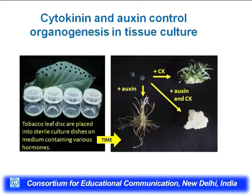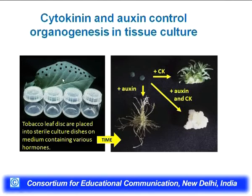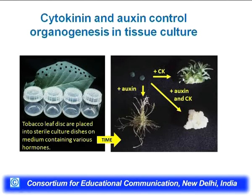Cytokinin and auxin control organogenesis in tissue culture. For students who don't know about tissue culture — you take a leaf, make some cuts, surface sterilize to remove bacteria, then put it on a medium that supports plant growth. One can then apply cytokinin, auxin, or both together. If you apply cytokinin alone, there is much more shoot growth and negligible root growth. If you apply only auxin, you find the reverse — very little shoot but a large amount of root structure.